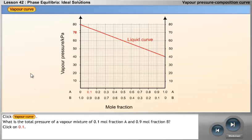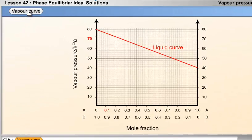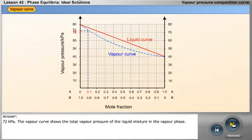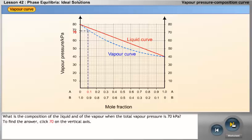Click the vapour curve button. What is the total pressure of a vapour mixture of 0.1 mole fraction A and 0.9 mole fraction B? Click on 0.1. Answer: 72 kPa. The vapour curve shows the total vapour pressure of the liquid mixture in the vapour phase. What is the composition of the liquid and of the vapour when the total vapour pressure is 70 kPa? To find the answer, click 70 on the vertical axis.